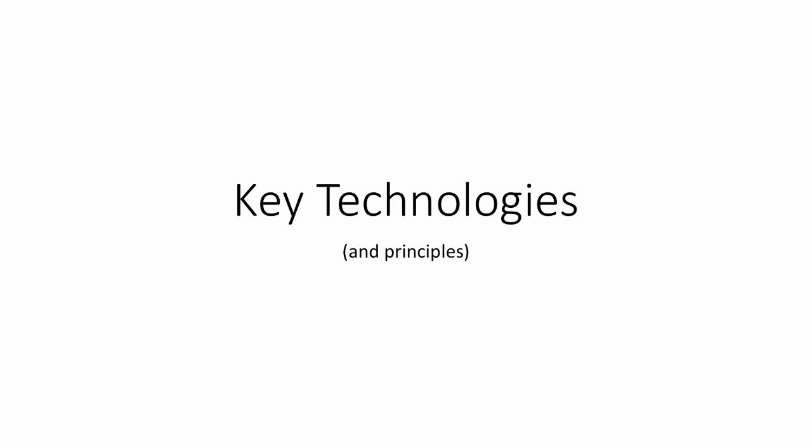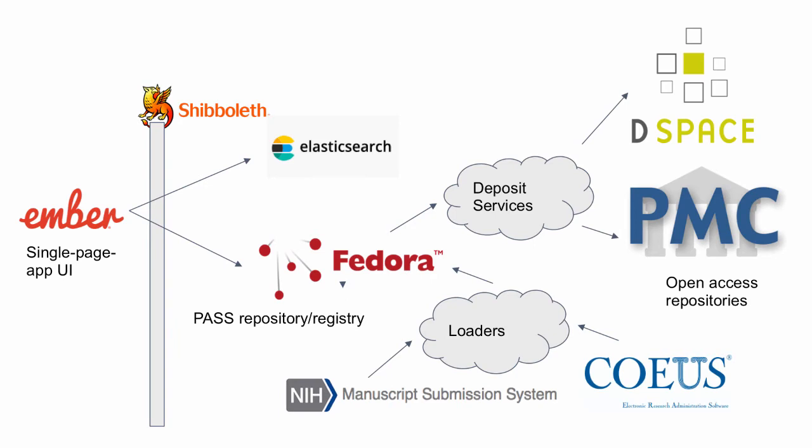I'm Aaron Berglund, on the development team at PASS. I'd like to talk about some of the key technologies and give a sense of what PASS is actually doing. At the center of the architecture is a repository that contains our key business objects — we have objects to represent users, submissions, policies, and so on. Ultimately, every component in PASS ends up reading or writing to the repository at some point. It's our central source of truth.